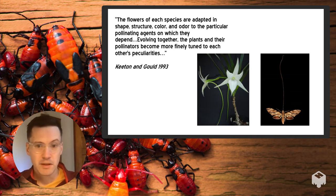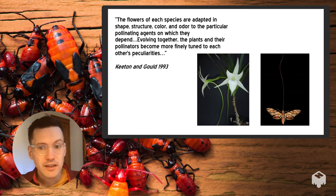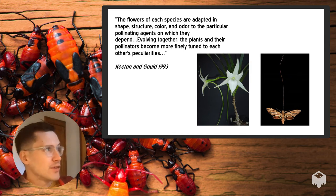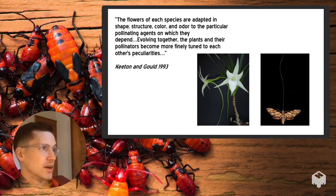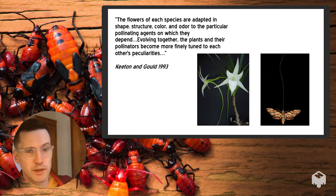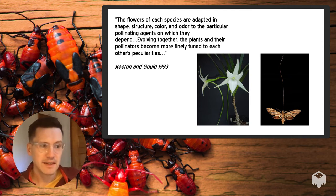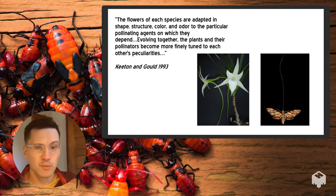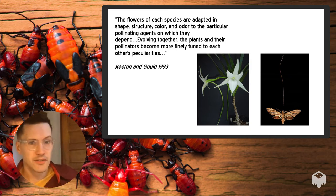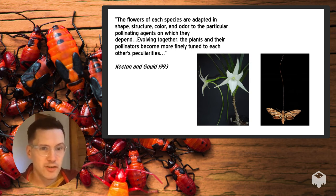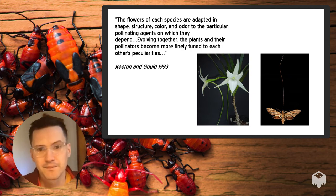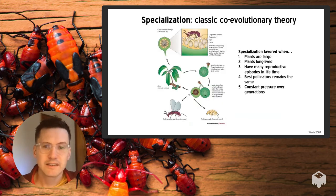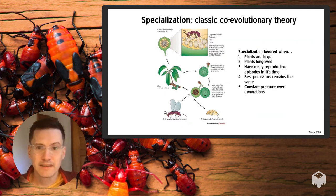Specific floral traits could be associated with specific pollinator taxa — as summarized by Keaton and Gould: 'The flowers of each species are adapted in shape, structure, color, and odor to the particular pollinating agents on which they depend. Evolving together, the plants and their pollinators become more finely tuned to each other's peculiarities.' A classic example is the Madagascar orchid, described by Darwin, for which it took almost a century of searching to find the actual pollinator — a moth with an extremely long proboscis. This ultimately led to the idea of specialization, where plants and their pollinators are intimately linked in a co-evolutionary trajectory.